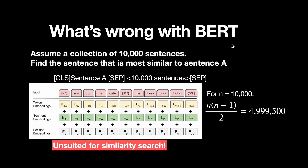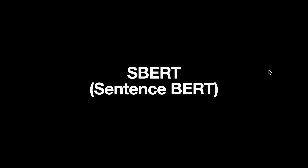But what's wrong with BERT? BERT is notorious for being very slow at similarity search because it uses a cross-encoder architecture — two sentences must be stacked together and passed through BERT simultaneously. If we have 10,000 sentences and want to find which is most similar to a given sentence, we'd need to evaluate approximately 4.9 million pairs. The SBERT paper states this would take about 65 hours of computation, which is impractical.